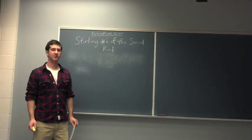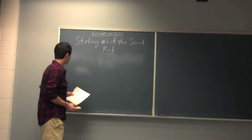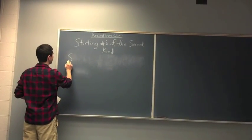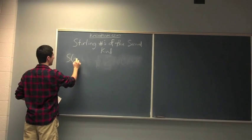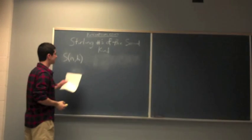Our video for today is going to be discussing Stirling numbers of the second kind. This is written as capital S, N distinguishable objects, K indistinguishable objects.